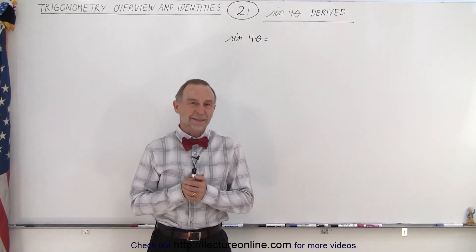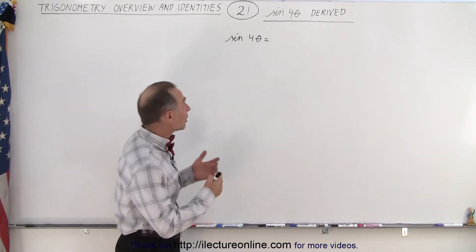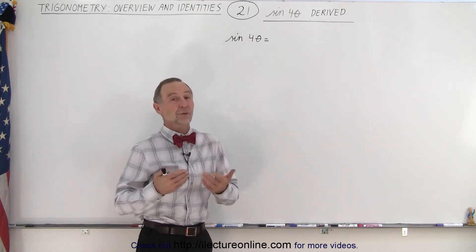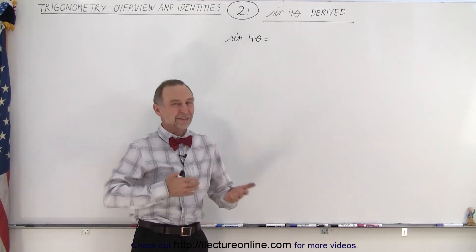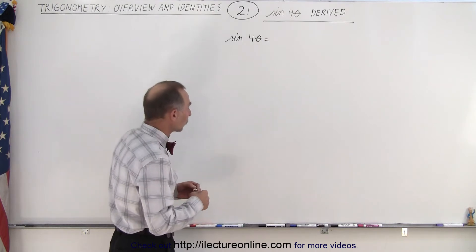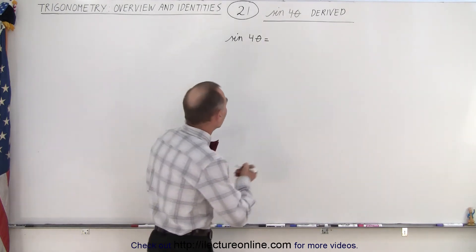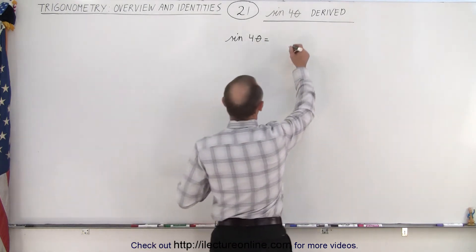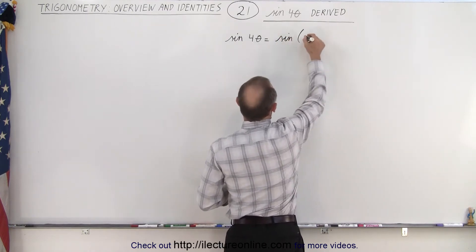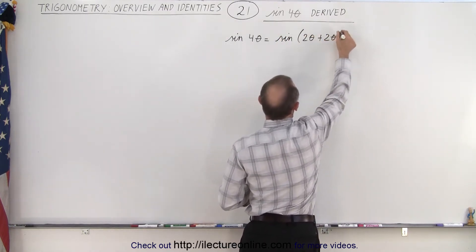Welcome to our lecture online. The next exercise will be to take the sine of 4 times the angle and write it in terms of sines and cosines of a single angle. Again we're going to use the identity of the sum of angles. We're going to write this as the sine of 2 theta plus 2 theta.